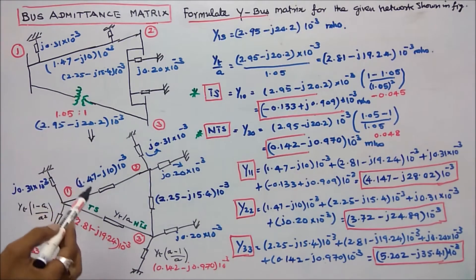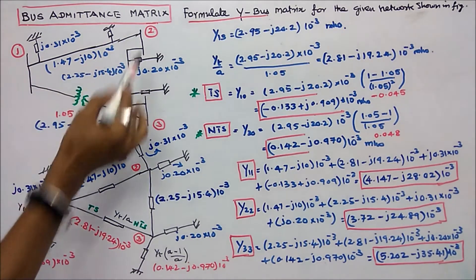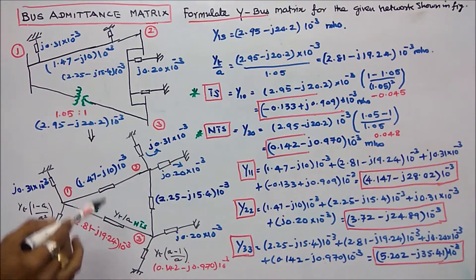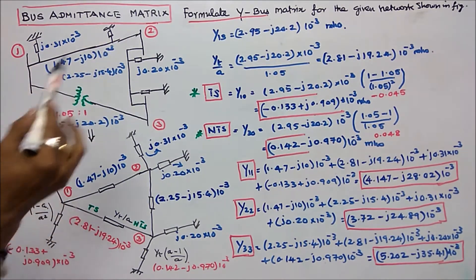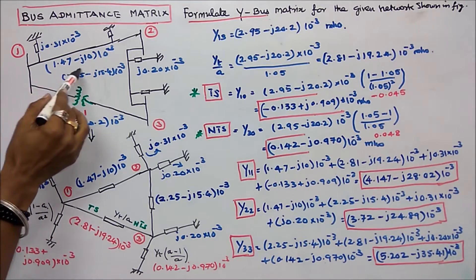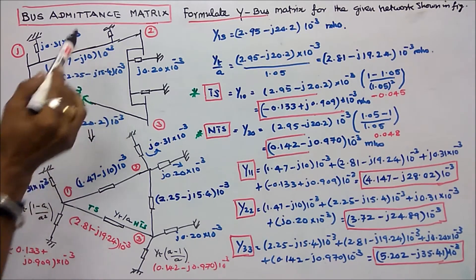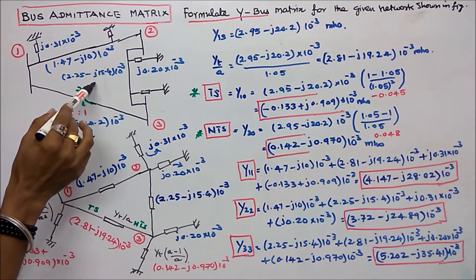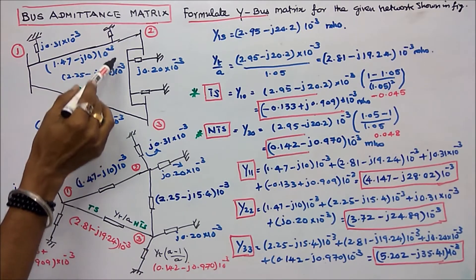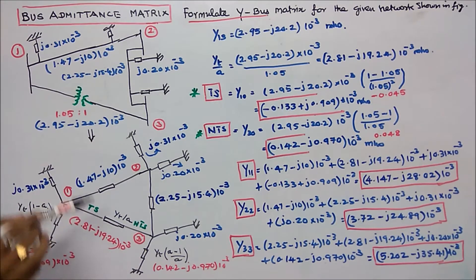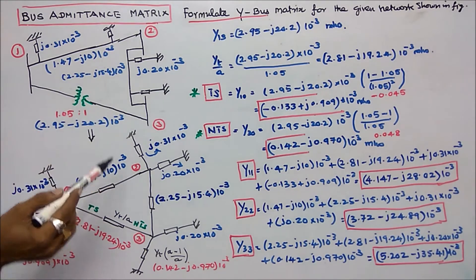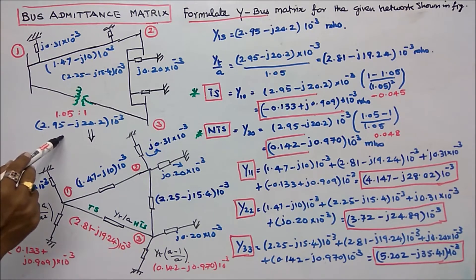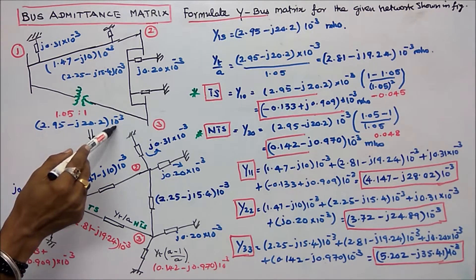This figure consists of three buses 1, 2, 3 and three lines. Line 1-2 series admittance is 1.47 minus j10 into 10 power minus 3. Line 2-3 admittance is 2.25 minus j15.4 into 10 power minus 3. Line 1-3 including transformer admittance is 2.95 minus j20.2 into 10 power minus 3.